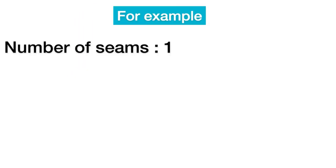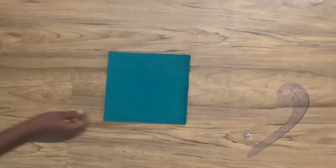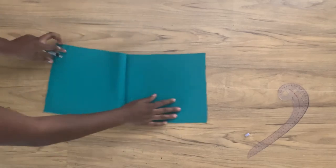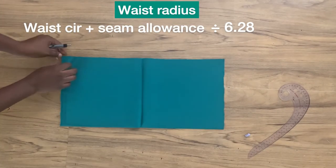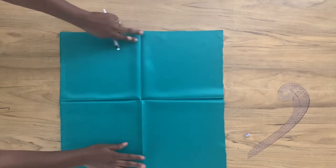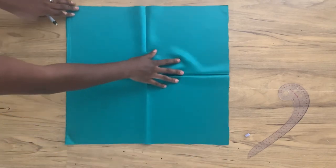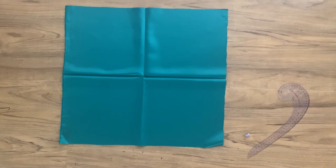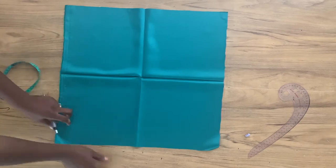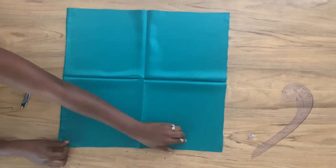To cut directly on your fabric, decide the number of seams you want on your circle skirt and then calculate the seam allowance. Add your seam allowance to your waist circumference and divide that by 6.28, which is the formula for the full circle skirt. You also need to add your hem allowance to the full length of the skirt. I've already calculated the amount of fabric needed and I have a perfectly square-shaped piece of fabric.